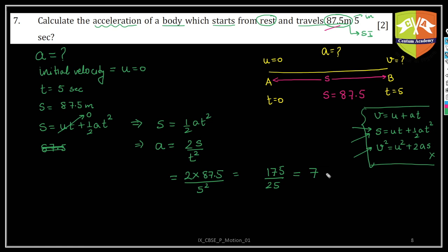But you have to also give the units. Always remember, this is error zone - where you don't write the units. So units will be in SI units, right? 7 meters per second square.